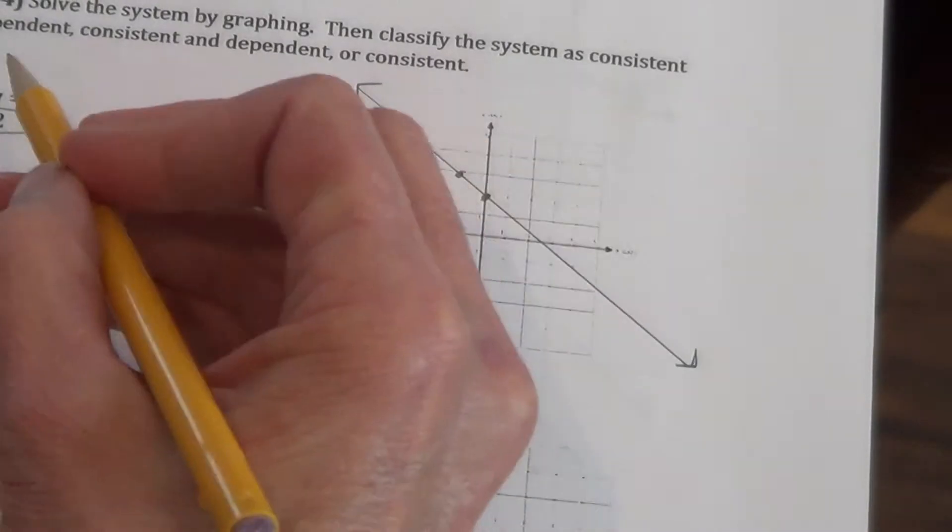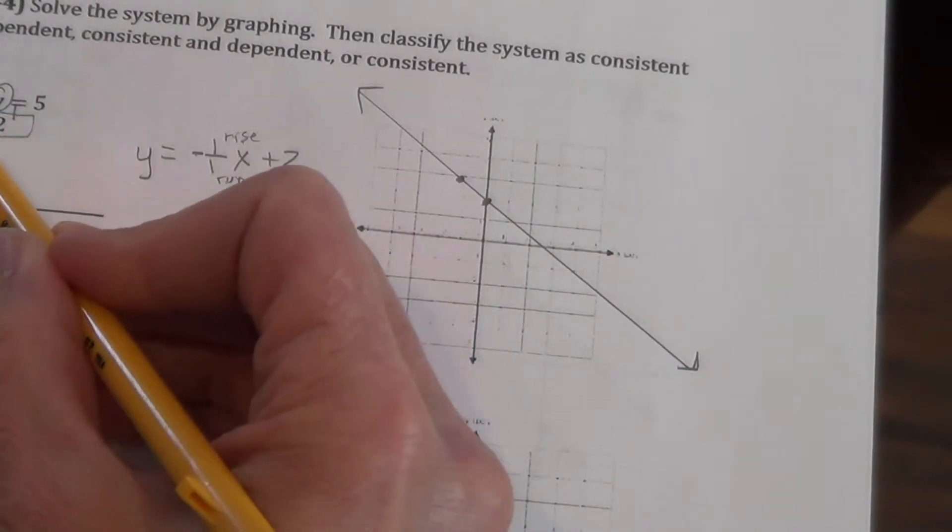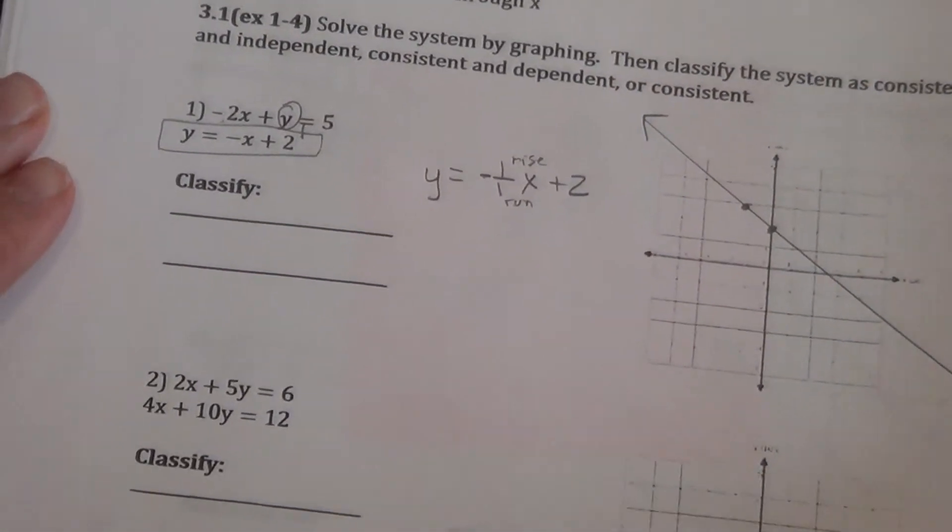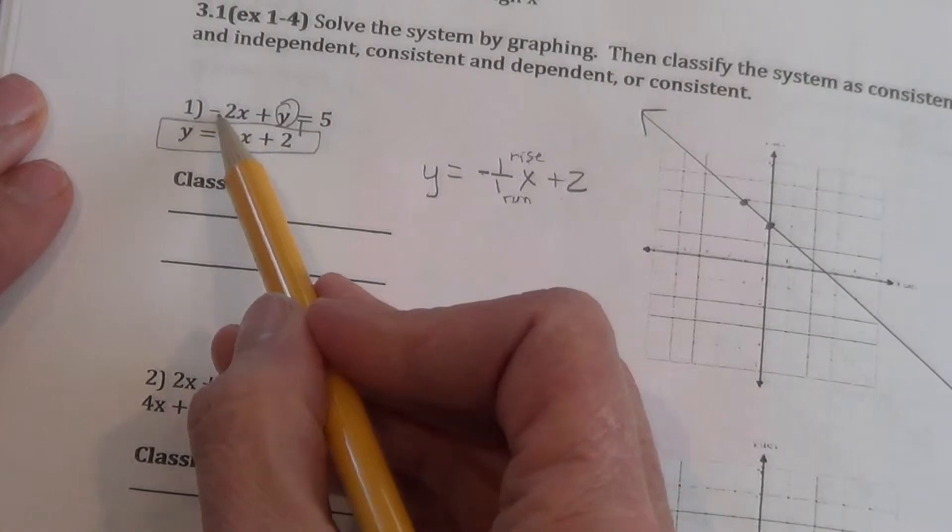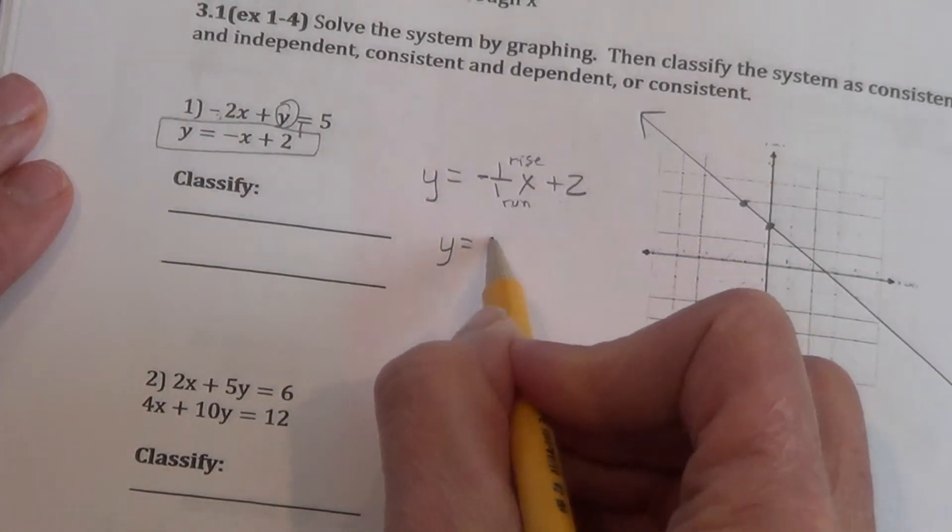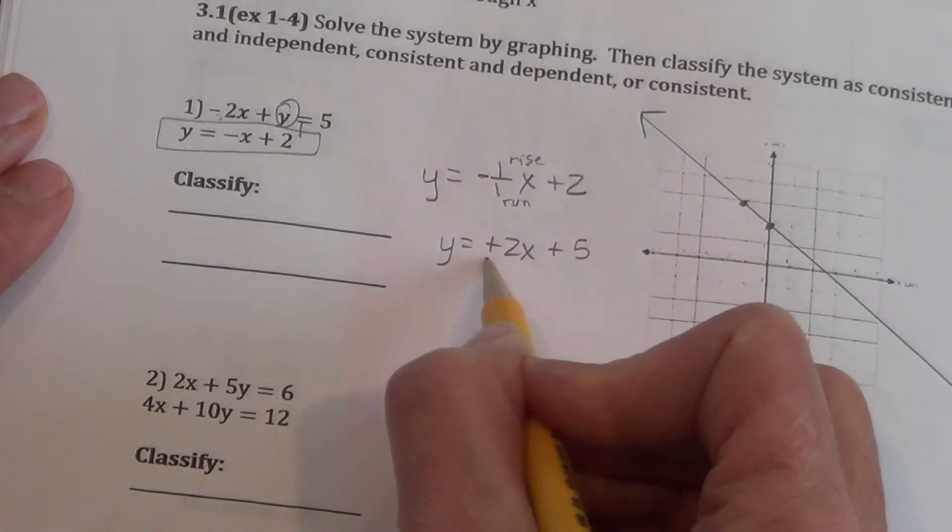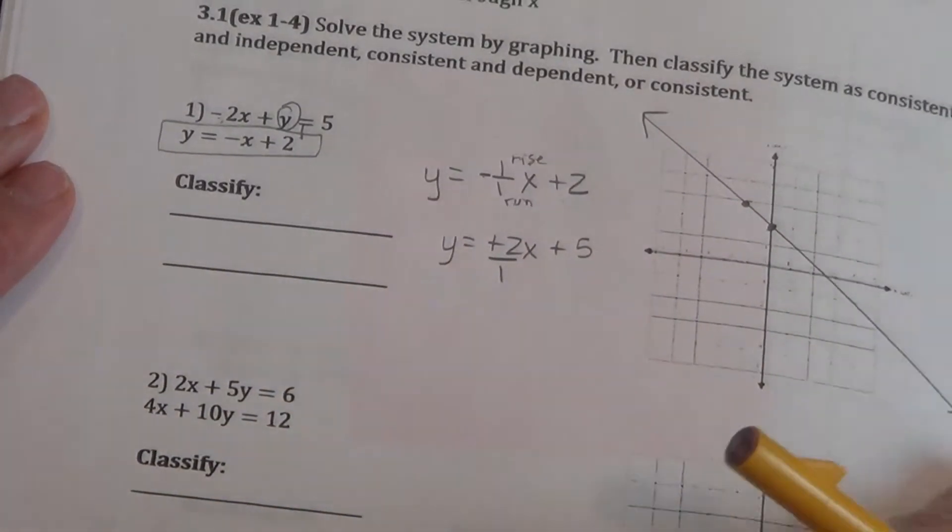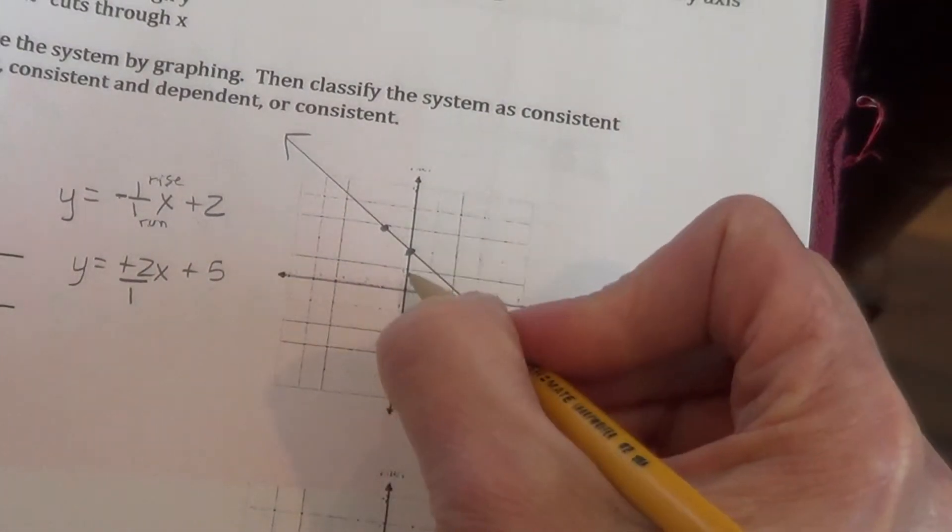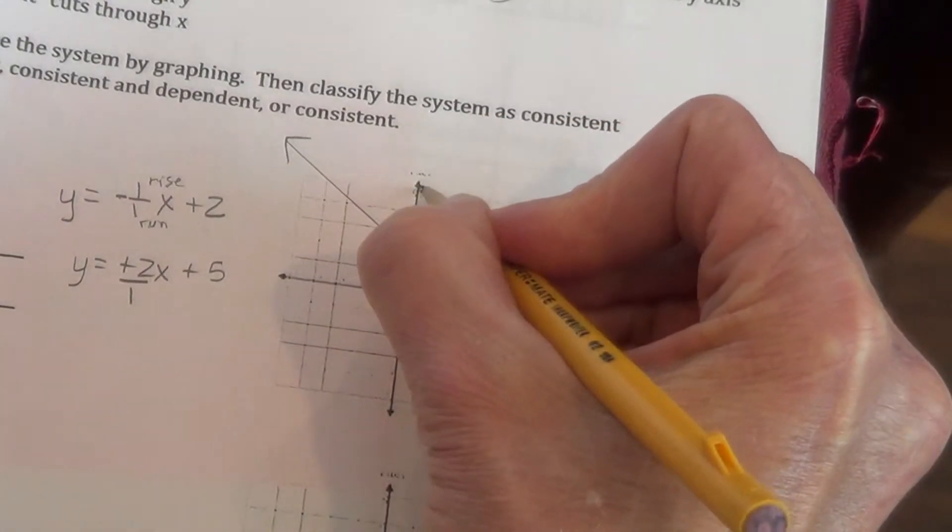The other equation needs to be manipulated. We need to get that y by itself. In order to do that, we're going to add the 2x to each side. So, we have y equals plus 2x plus 5. So, our slope is a rise of 2 over 1, and we go up to 5 on the y-axis. So, we go 1, 2, 3, 4, 5. Put a dot.